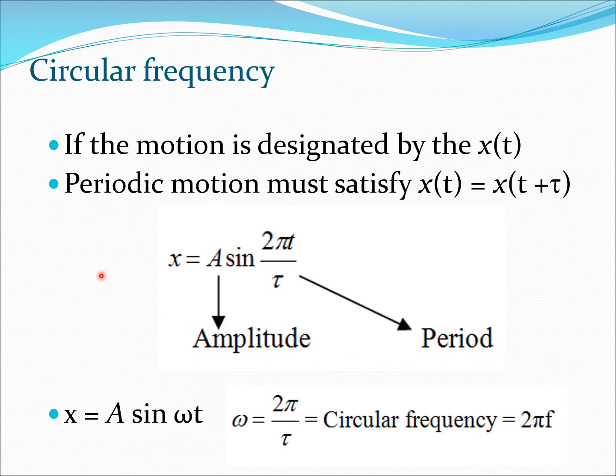So we designate this motion by x of t, x as a function of t. And any periodic motion must satisfy x of t equals x of t plus tau. That means after time period tau this motion will repeat. So we can write x as A sine 2π t by tau. So A is known as the amplitude of the motion, tau is the period, and 2π t by tau is what is inside this sinusoidal function. So to simplify this we define something known as the circular frequency and that is given by the Greek letter omega.